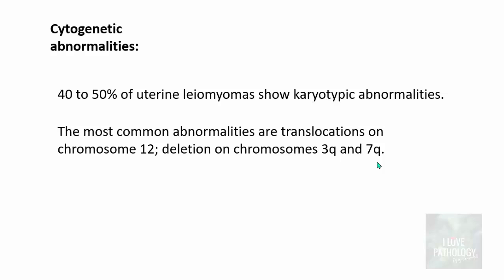There are some cytogenetic abnormalities. 40 to 50 percent of them they show karyotypic abnormalities. The most common being translocations on the chromosome number 12, deletions on the chromosome of the long arm of chromosome 3 and the long arm of chromosome number 7. There are some genes involved which are HMGA2, ESR2, RAD5 and MAD12. These are the genes involved in leiomyomas.